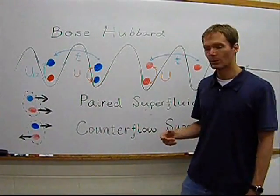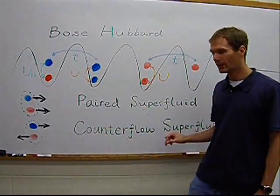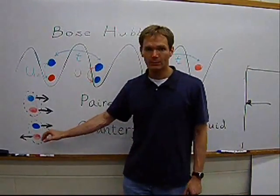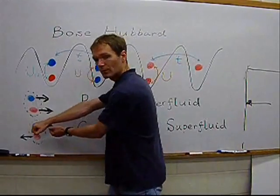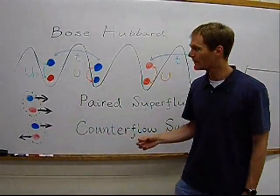At half-filling and repulsive interaction, one can also have a so-called counterflow superfluid phase, in which the atoms form anti-pairs where the atoms continuously counter-propagate. Out of these anti-pairs, the system forms a quasi-condensate.